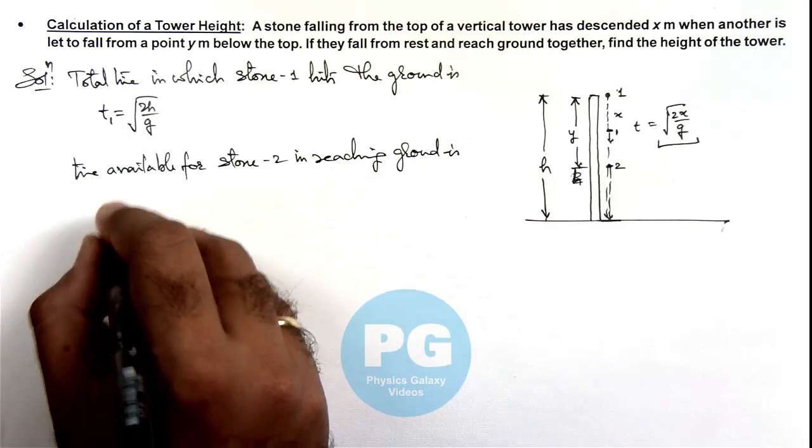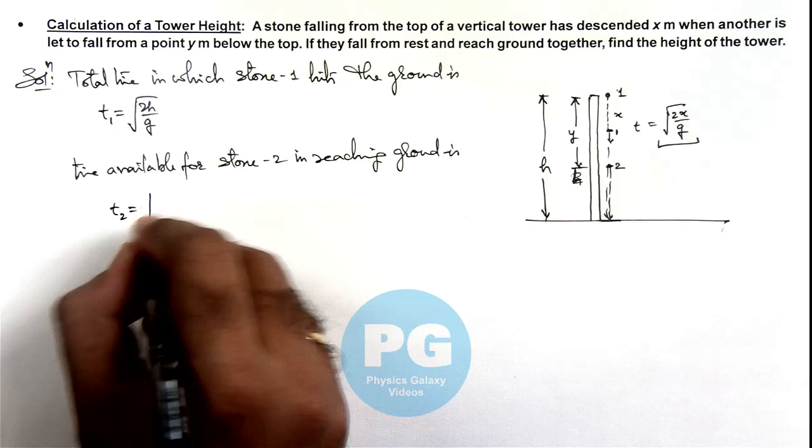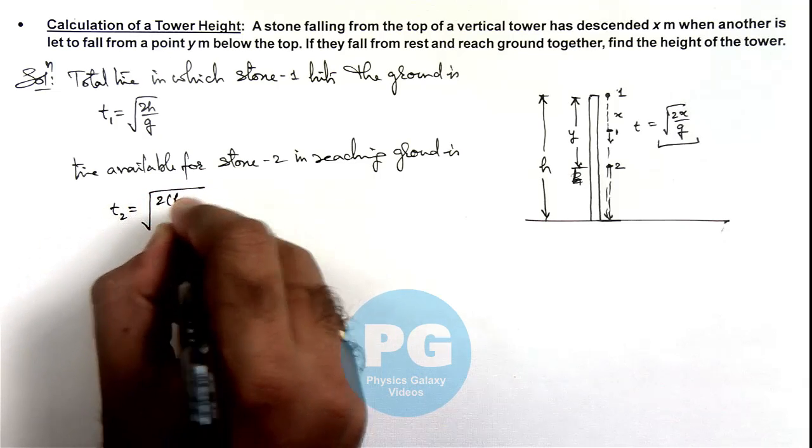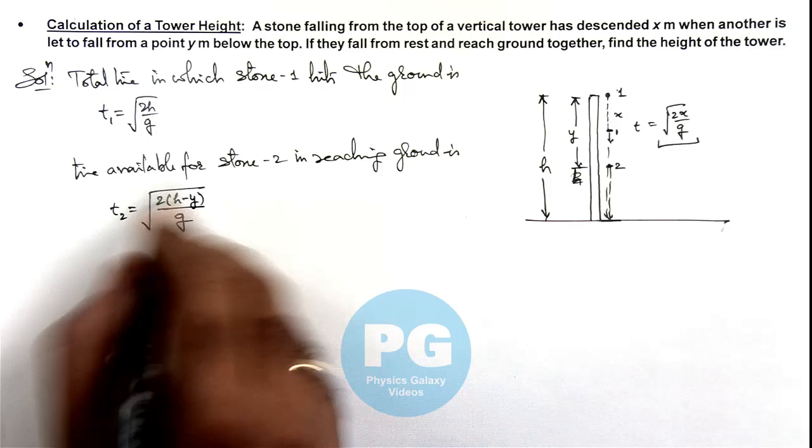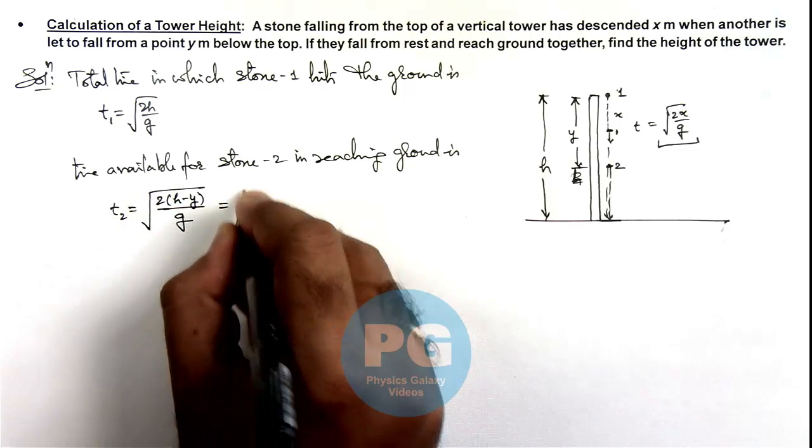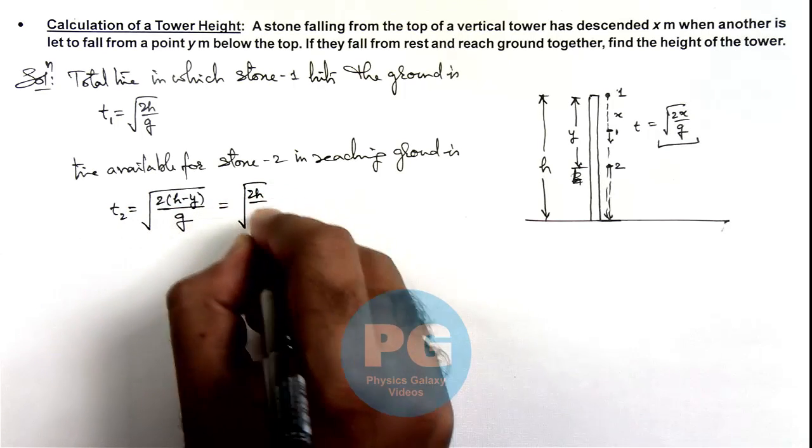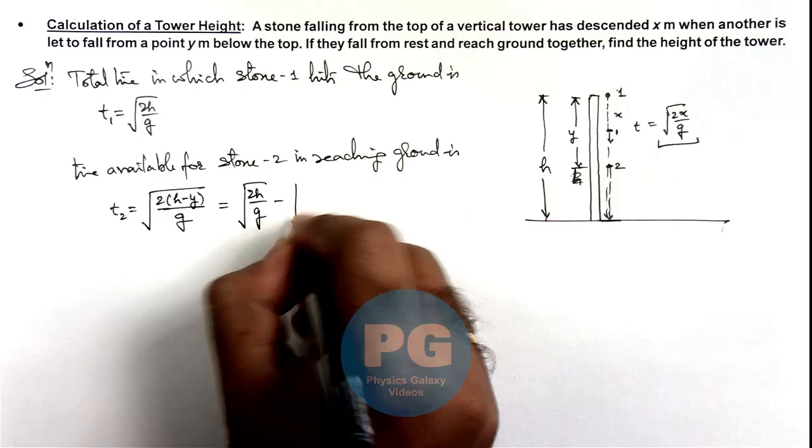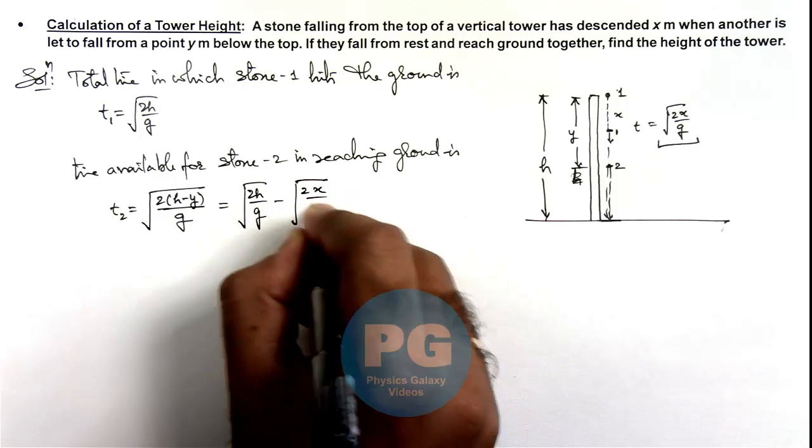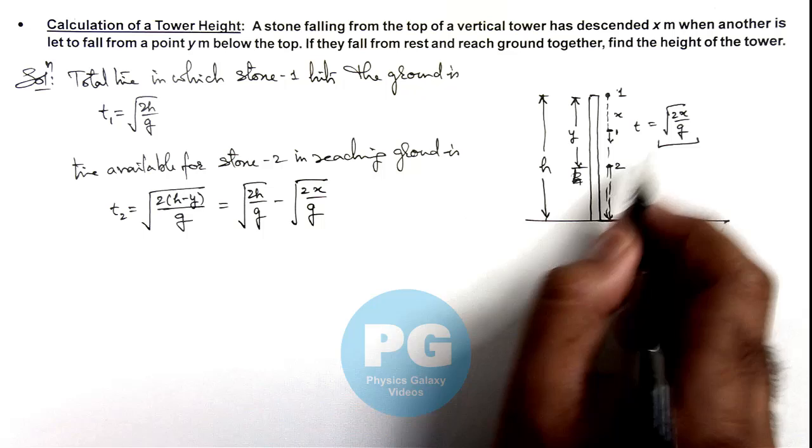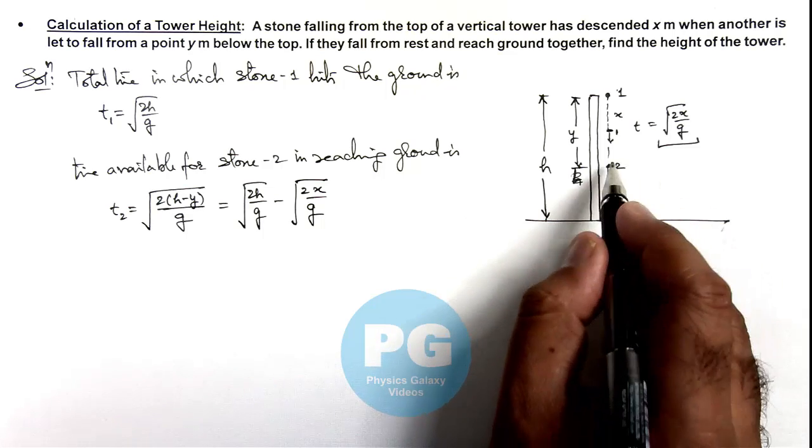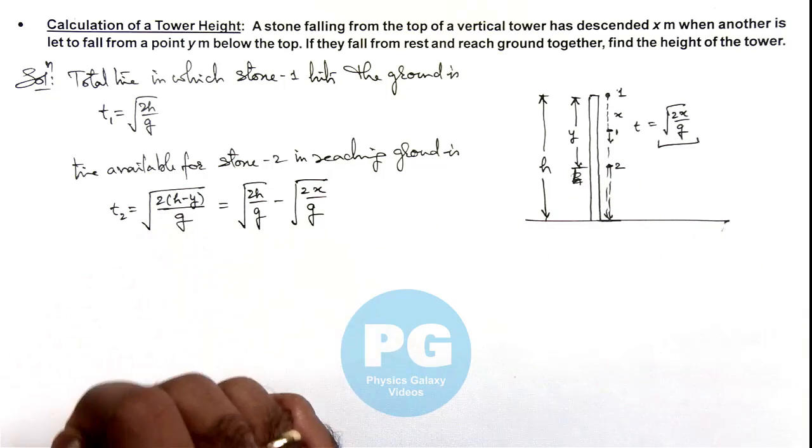This time can be written as t2 and is root of twice of h minus y by g. And this time we can equate with root 2h by g minus root of 2x by g, because out of this root 2x by g, this much time is gone, and the remaining time is the time taken by stone 2 in reaching ground.